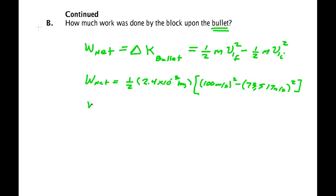And you can see we're going to definitely end up getting a negative amount of work. That is, the block slowed the bullet down. So let me pull my calculator out and I get an incredibly large negative number: minus 6,485,687 joules. Let's see, that's like minus 6.49 megajoules.